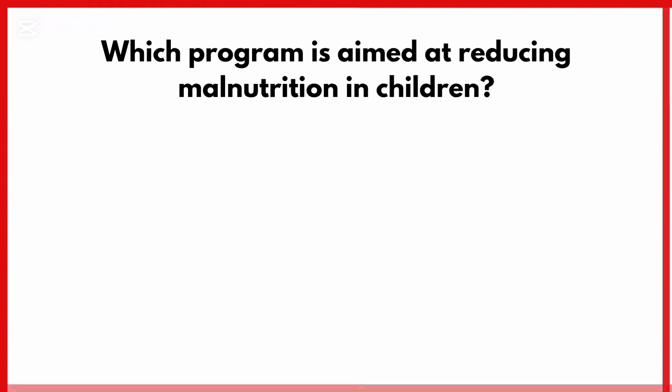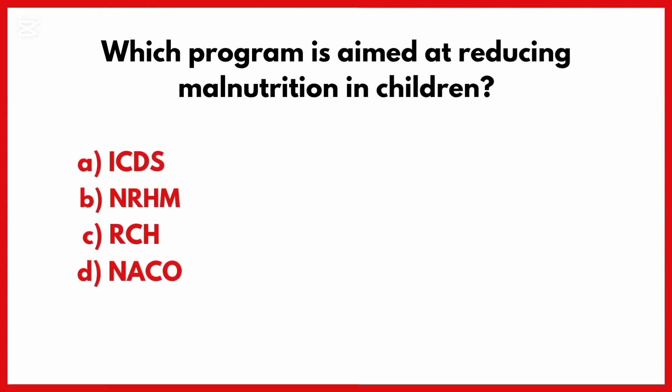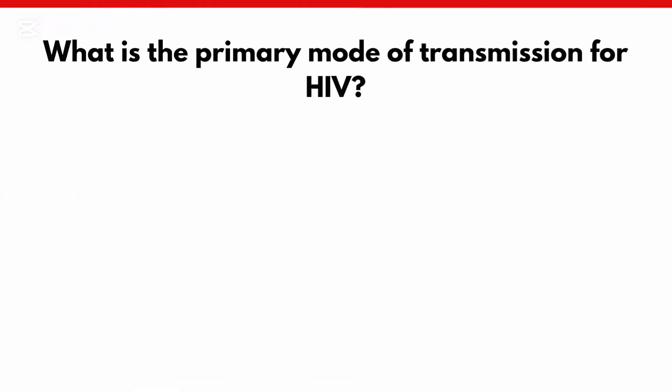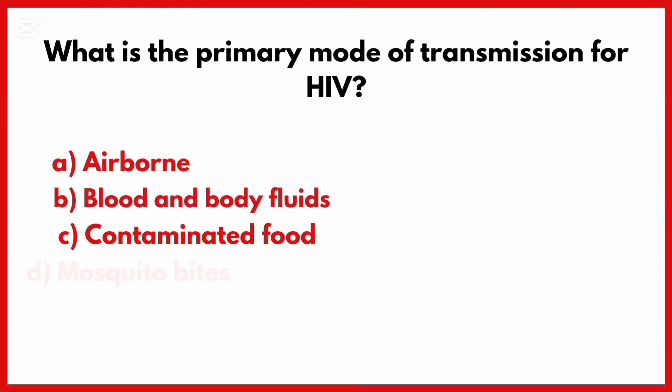Which program is aimed at reducing malnutrition in children? Correct answer is option B. What is the primary mode of transmission for HIV?